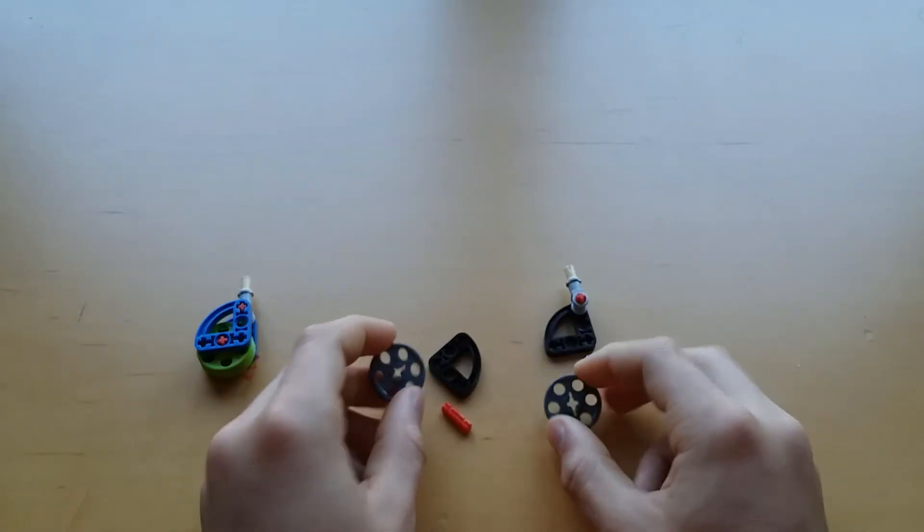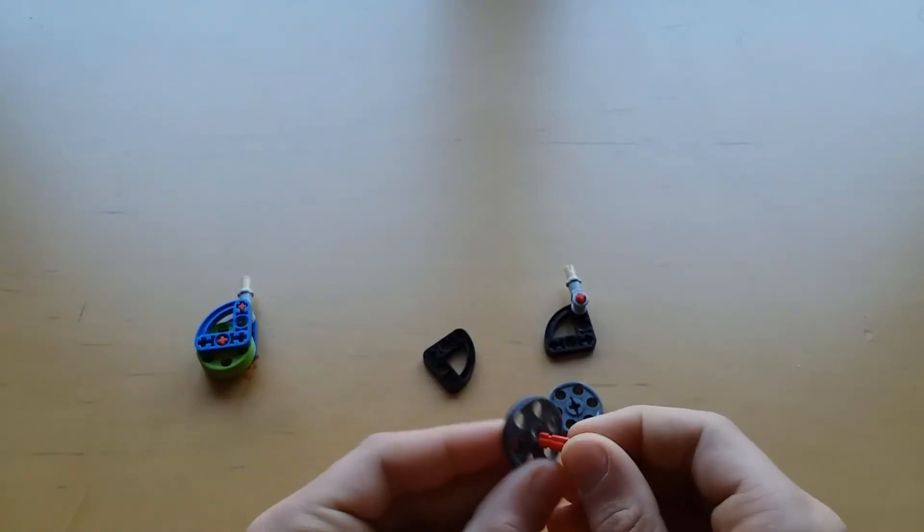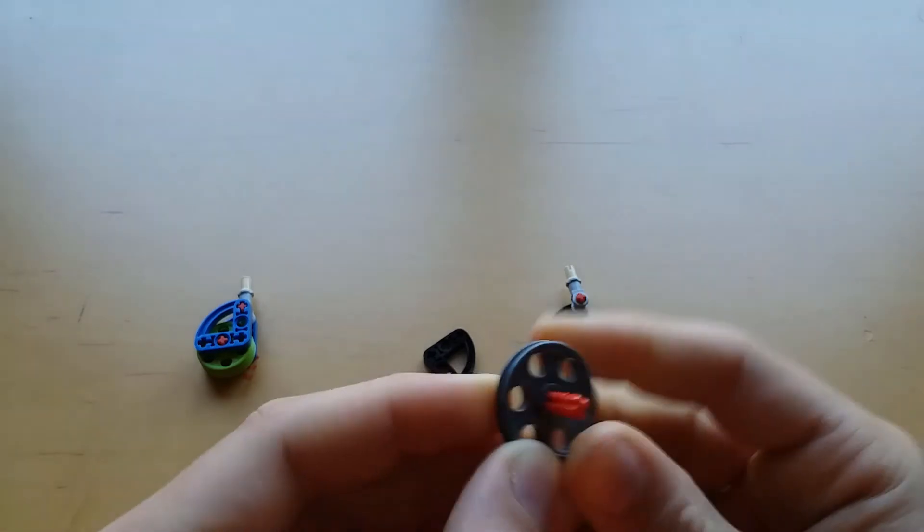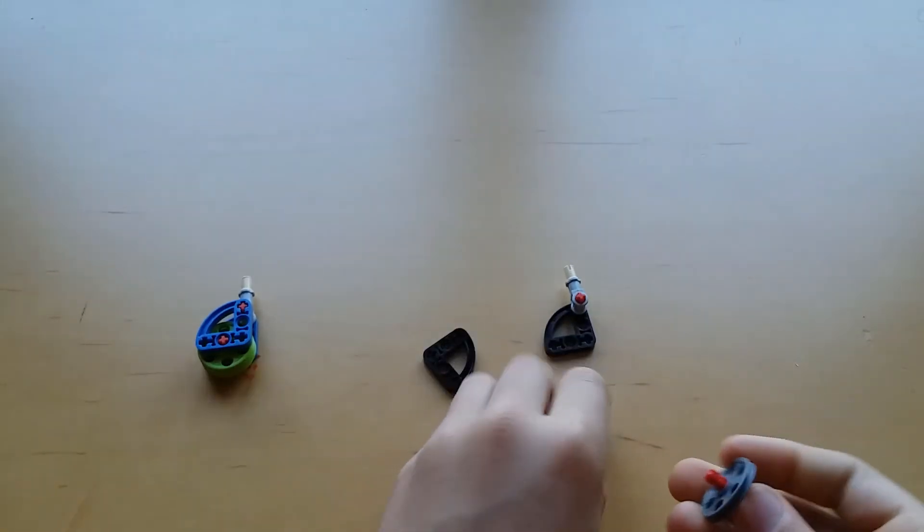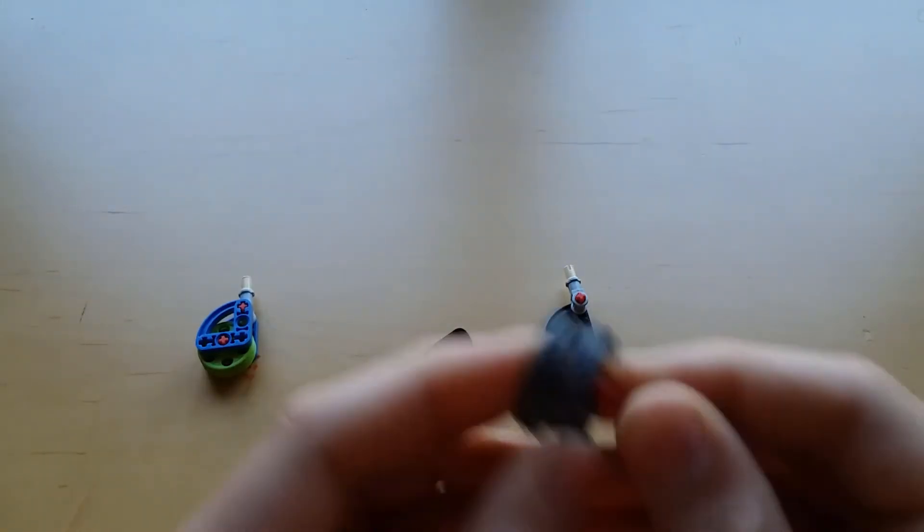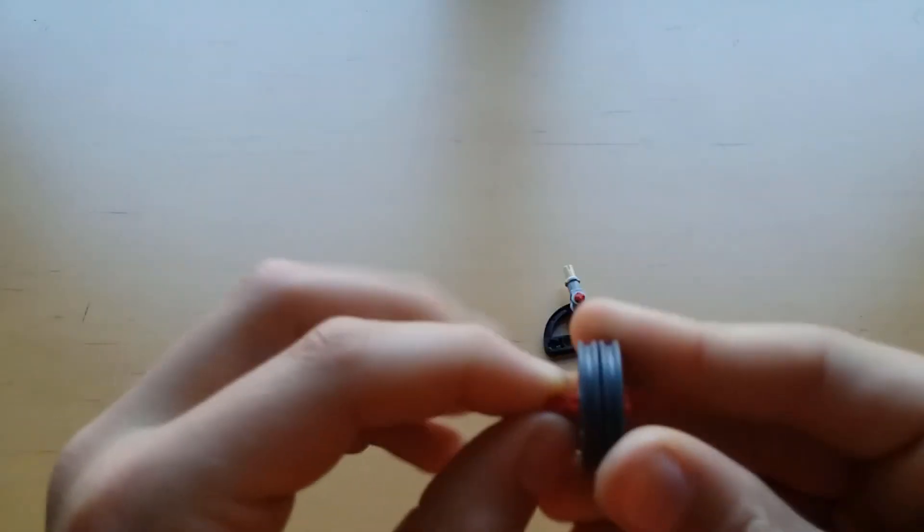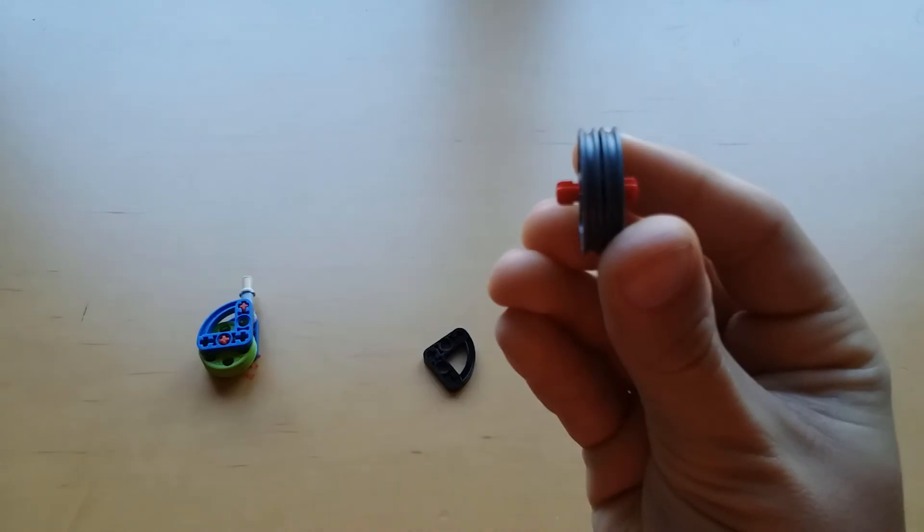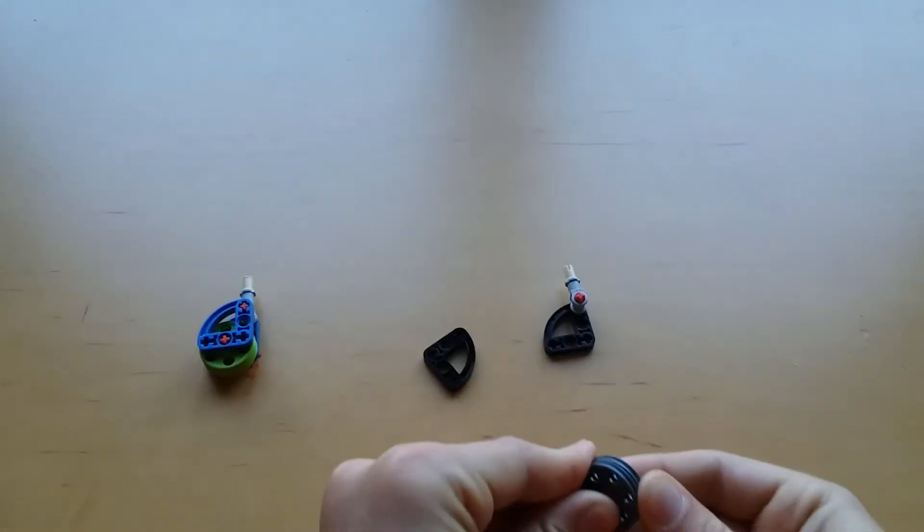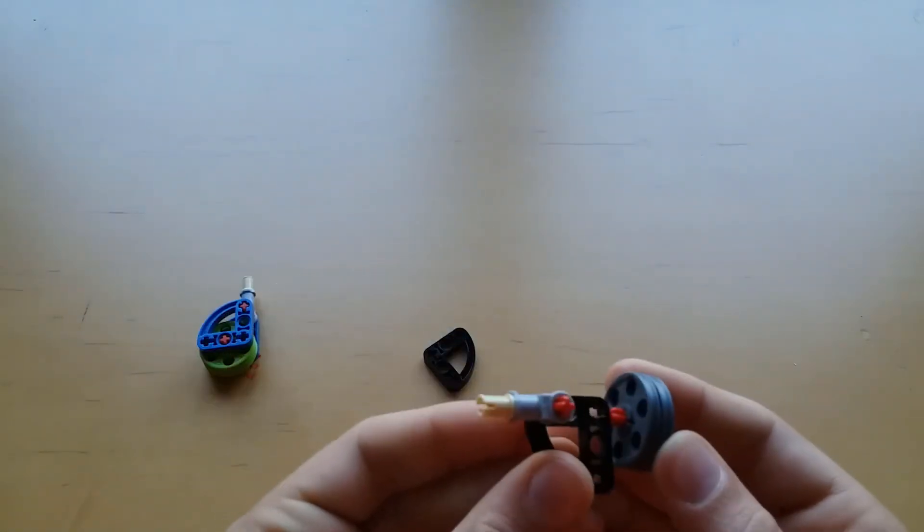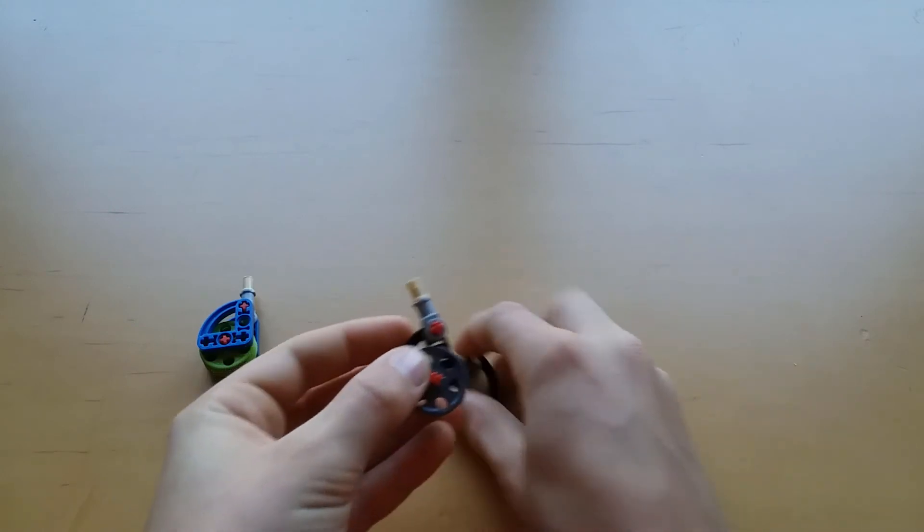Now take the two wheels and thread the two long axle between them. The axle should have an even amount sticking out on both sides. Then stick it in to the piece, just like that, and add the other piece on top.